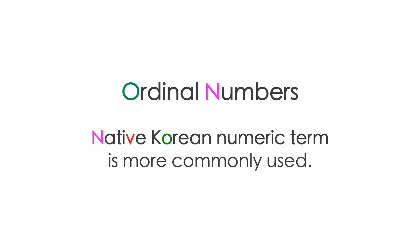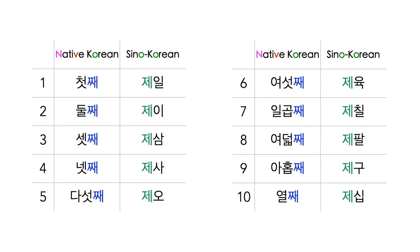For ordinal numbers, native Korean numeric terms are commonly used, but there are always some exceptions. To make ordinal numbers, 째 is added to the native Korean number: 첫째, 둘째, 셋째 mean first, second, and third. 제 is added to Sino-Korean numbers to make ordinal numbers: 제일, 제이, 제삼.